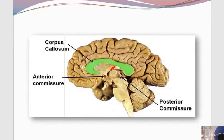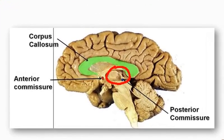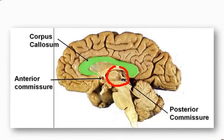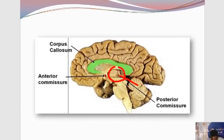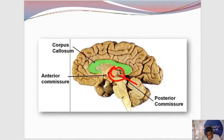That brings our attention to the third ventricle. The third ventricle is within the diencephalon, residing between the two thalami. Usually in a mid-sagittal view, what will be pinned is the thalamus. The thalamus, which is the sensory relay station of the brain, is lateral to the third ventricle.